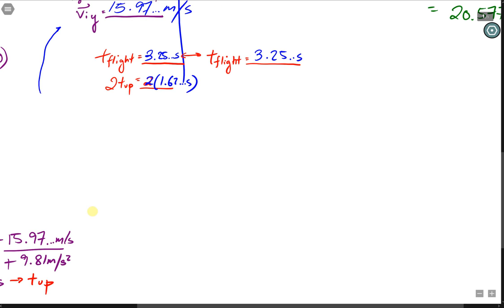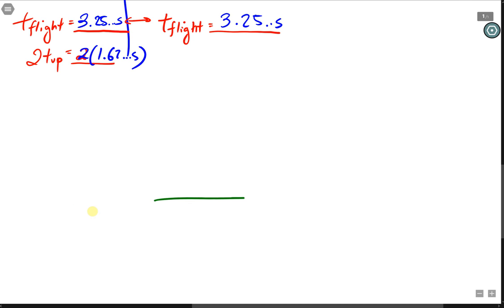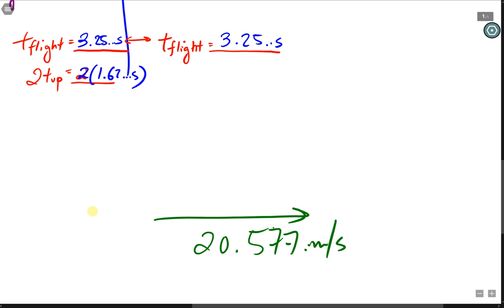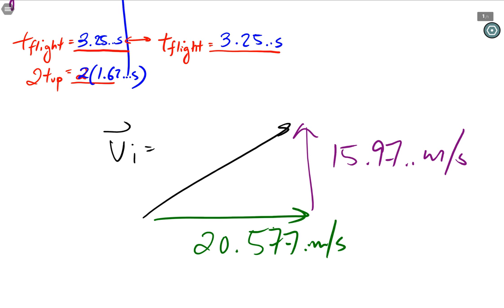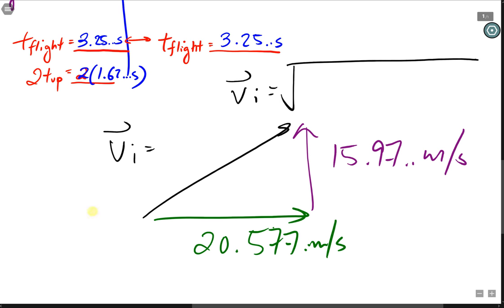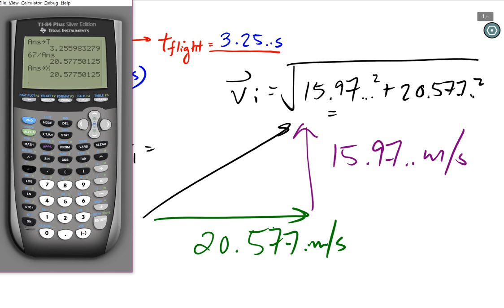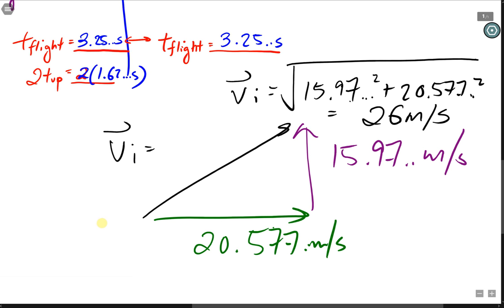Going back to vector addition, we have a horizontal velocity, which is 20.577. And we have our vertical, which is 15.97 meters per second. And our resultant, which is our initial velocity. We can now use Pythagoras to help us find vi. So our vi is equal to the square root of 15.97 squared plus 20.577 squared. And this one gives us, I'm going to square my answer plus the vertical one, 15.97 squared. And I'm going to take the square root. This gives me 26 meters per second.